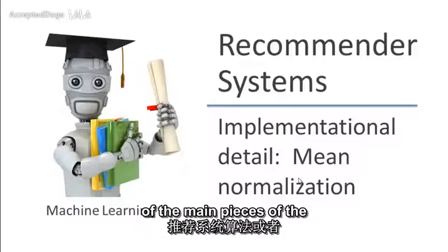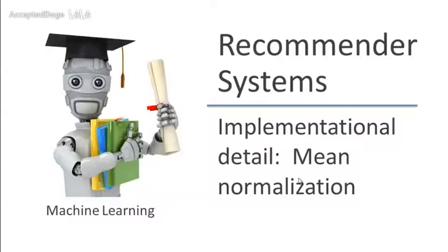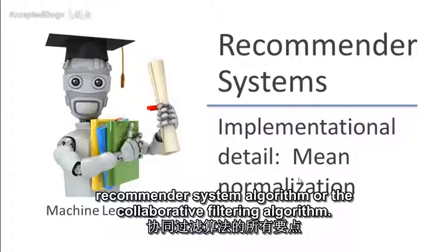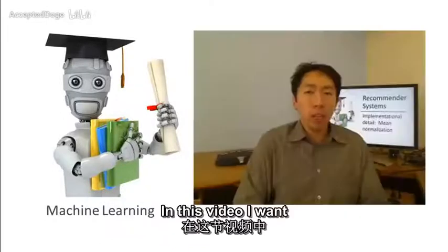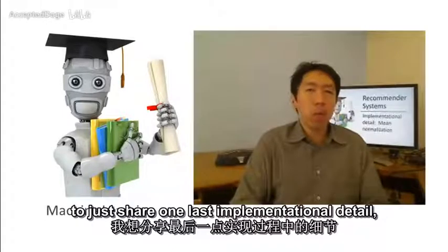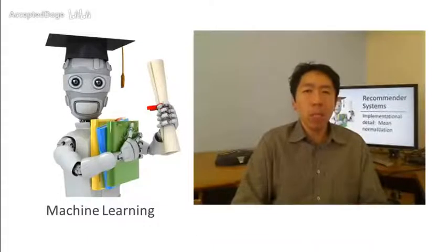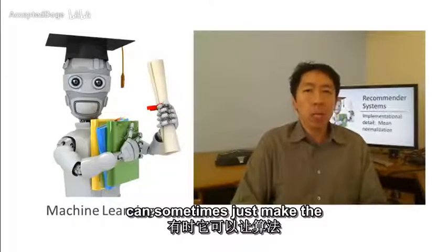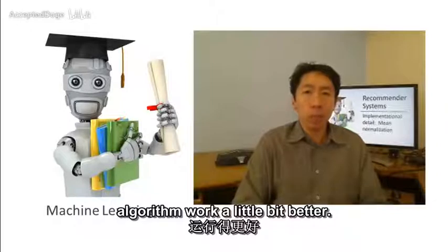By now, you've seen all of the main pieces of the recommender system algorithm or the collaborative filtering algorithm. In this video, I want to just share one last implementation detail, namely mean normalization, which can sometimes just make the algorithm work a little bit better.